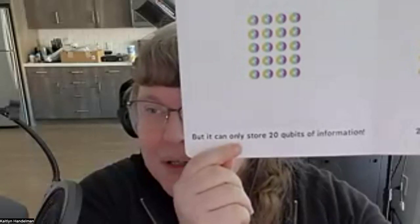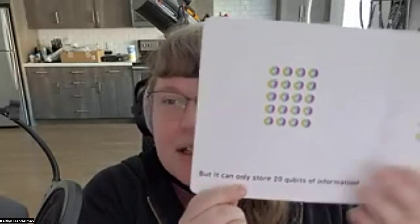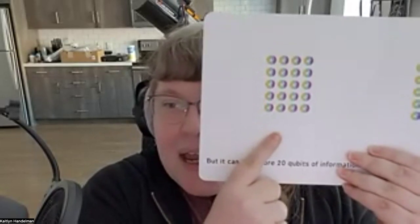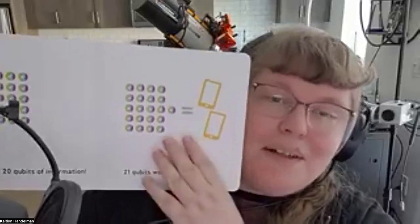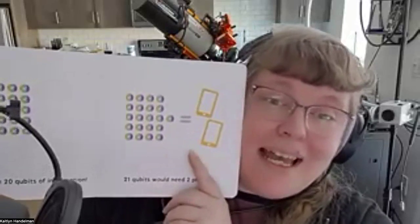With 21 qubits you would need two phones — you double the amount of information every single qubit you add. And 22 qubits would need four phones. The hosts express skepticism, noting they don't think the book knows the difference between a qubit and a bit.